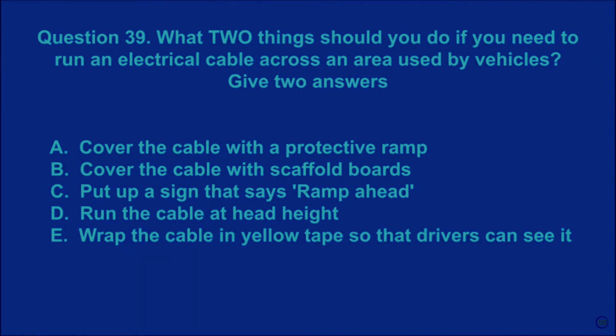Question 39: What two things should you do if you need to run an electrical cable across an area used by vehicles? Give two answers. A: cover the cable with a protective ramp. B: cover the cable with scaffold boards. C: put up a sign that says 'ramp ahead'. D: run the cable at head height. E: wrap the cable in yellow tape so that drivers can see it. The correct answer is A and C.